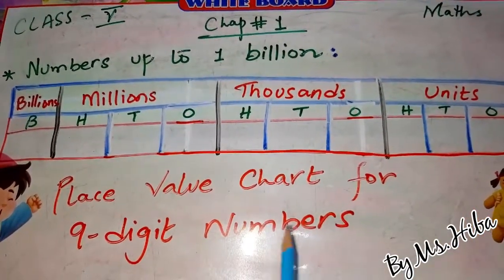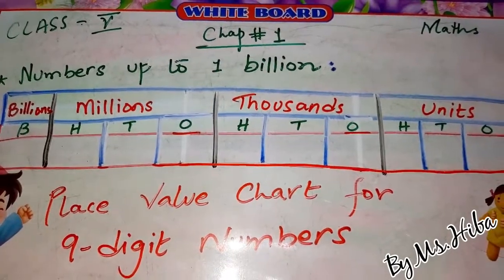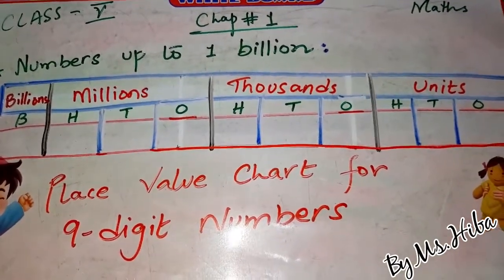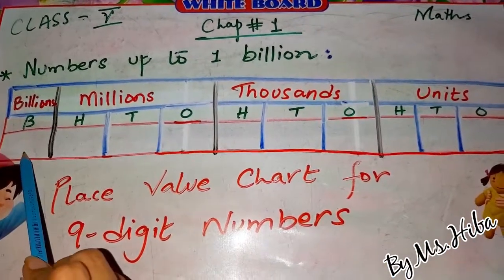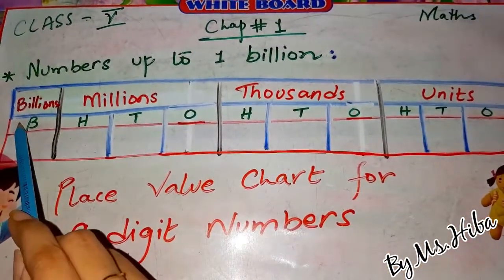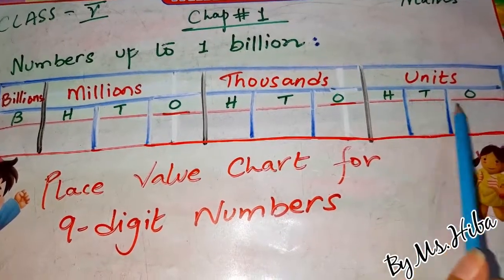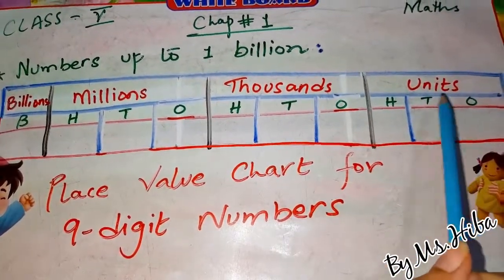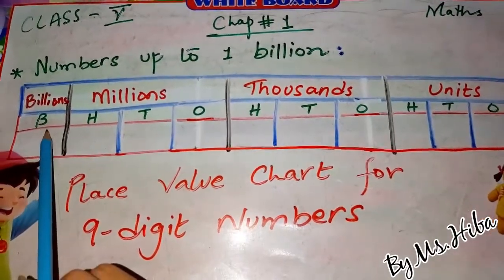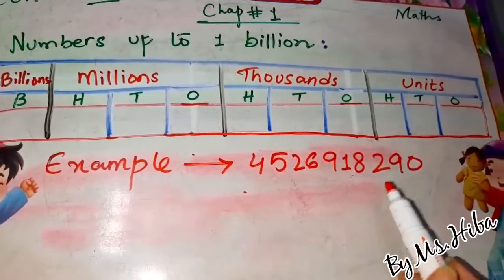We can also say this is a place value chart for nine-digit numbers. In a previous class or video, we saw seven- and eight-digit numbers. Now we have an extra column for billions. We have four periods: billions, millions, thousands, and units. Each period has three places — ones, tens, hundreds — except billions, which has only one place.